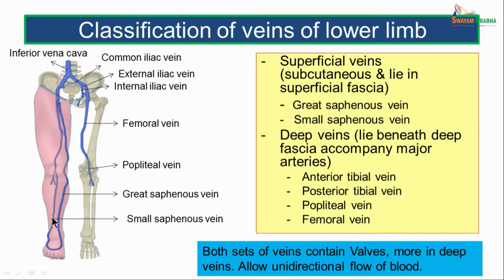This picture shows us the veins of the lower limb. Starting from the inferior aspect, we see the small saphenous vein, the dorsal venous arch, and the great saphenous vein. Continuing behind the knee joint is the popliteal vein, which comes up as the femoral vein and enters into the abdomen continuing as the external iliac vein. This is joined by the internal iliac, continuing as the common iliac, and then the two common iliac veins fuse to form the inferior vena cava.